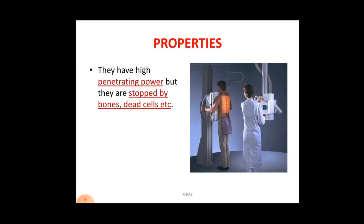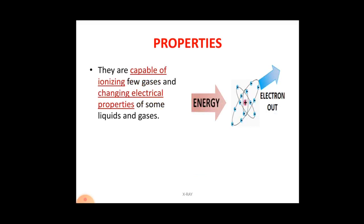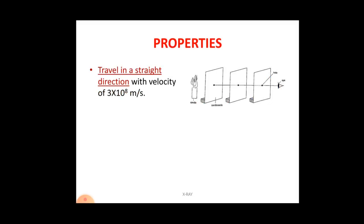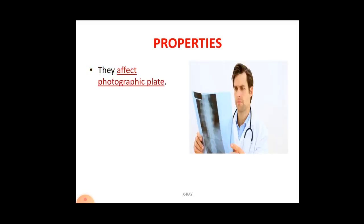X-rays have very high penetrating power — they can pass through body tissues but are stopped by bones and dead cells. Using this property, we take x-rays of different body parts for diagnosis. They are also capable of ionizing gases — converting molecules into ions — and can change electrical properties of some liquids and gases. Like light, x-rays travel in a straight line with a velocity of 3 × 10⁸ meters per second. They also affect the photographic plate, which is why we can obtain x-ray images in the medical field.